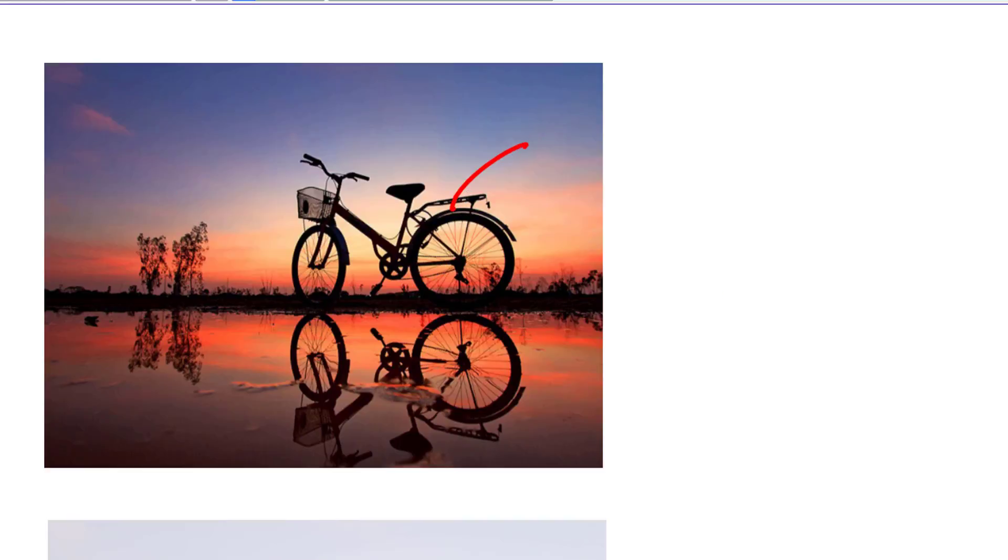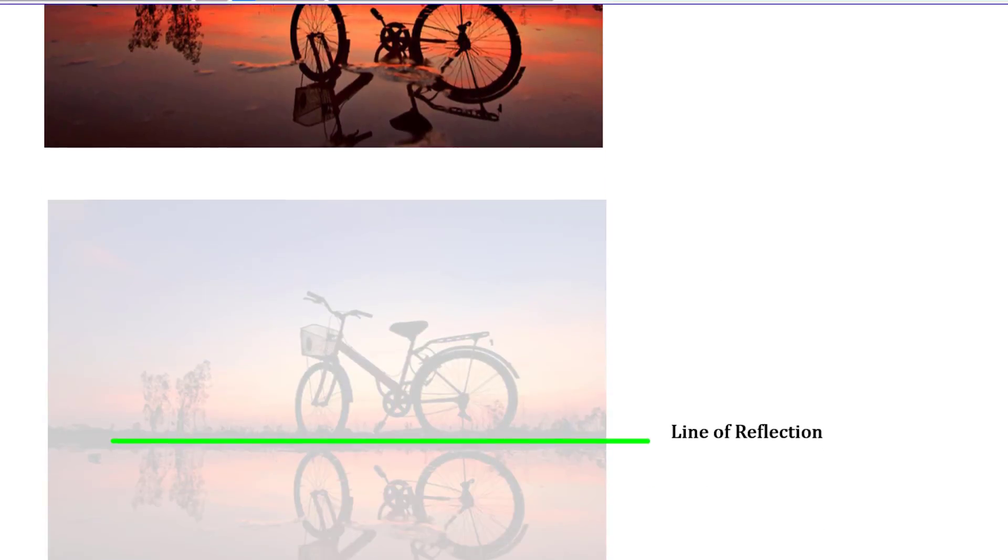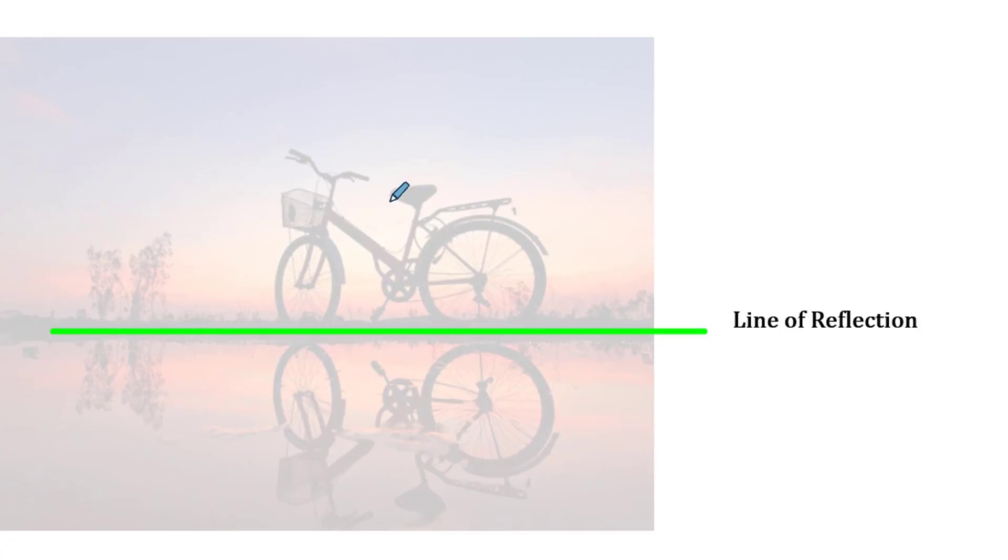So let me scroll down for you. I have the image a little bit less transparency here. This original bike is called the pre-image, and then the reflected image is called just the image.